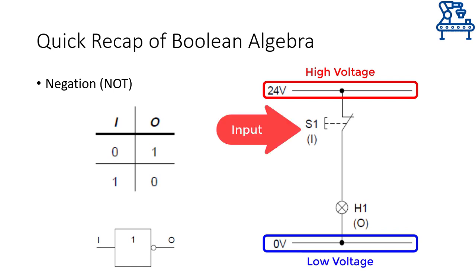The normally closed switch S1 represents the input of the NOT gate whereas the output is represented by H1. So when there is no input, the normally closed switch will relay the power to the output and the output will be ON. Whereas if you press the switch S1 — that is, turn on the switch — it will become open and hence disconnect the power to the output, turning it off. Hence this simple electrical diagram represents the NOT operation.